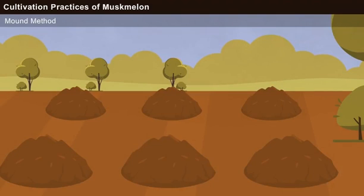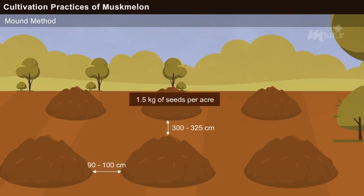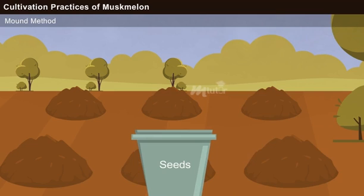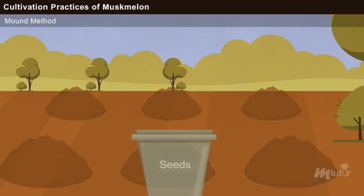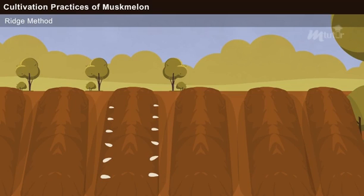Mount method. In this method, the seeds are sown on mounts. An inter-row spacing of 300 to 325 cm and an intra-row spacing of 90 to 100 cm is maintained for 1.5 kg of seeds per acre. The seeds are treated with 2% hydrochloric acid for better germination. Ridge method. In this method, the seeds are sown on the sides of raised beds.